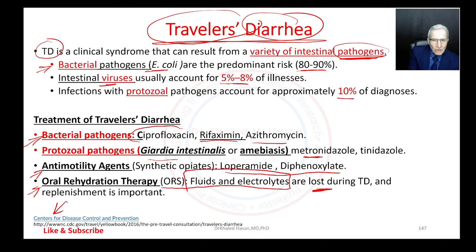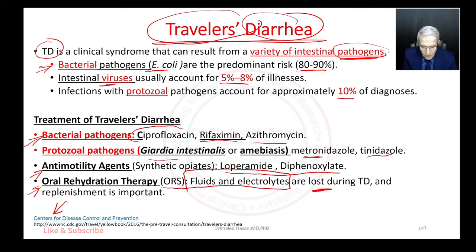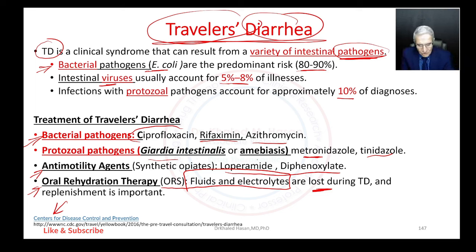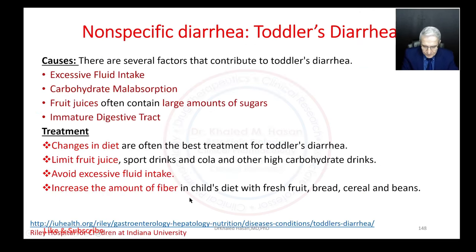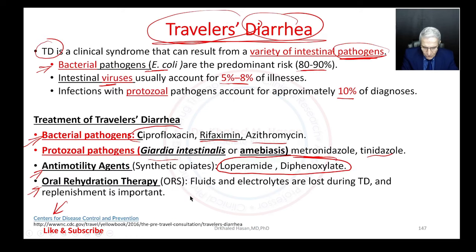To summarize: bacterial pathogens go to antibiotics — ciprofloxacin, rifaximin, azithromycin. Protozoa such as Giardia lamblia or amoebiasis go to metronidazole or tinidazole. For painful diarrhea where we need to relieve pain and stop diarrhea, we use loperamide or diphenoxylate. We are going to focus on these two medications in the next slides.